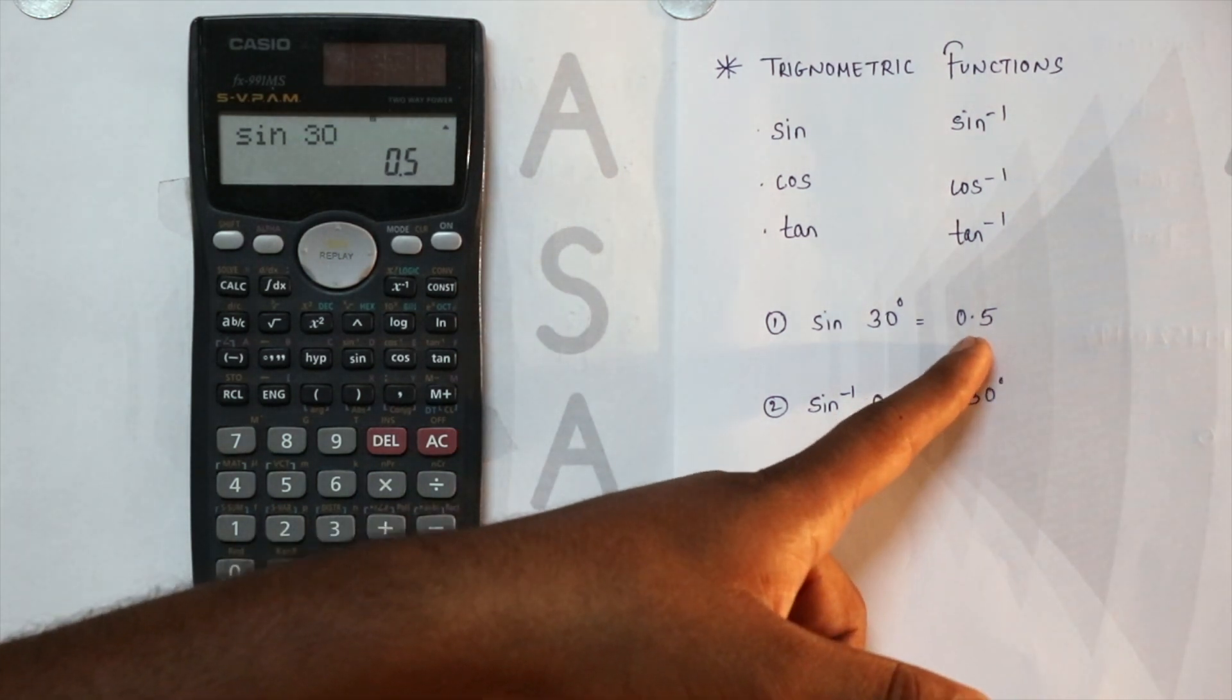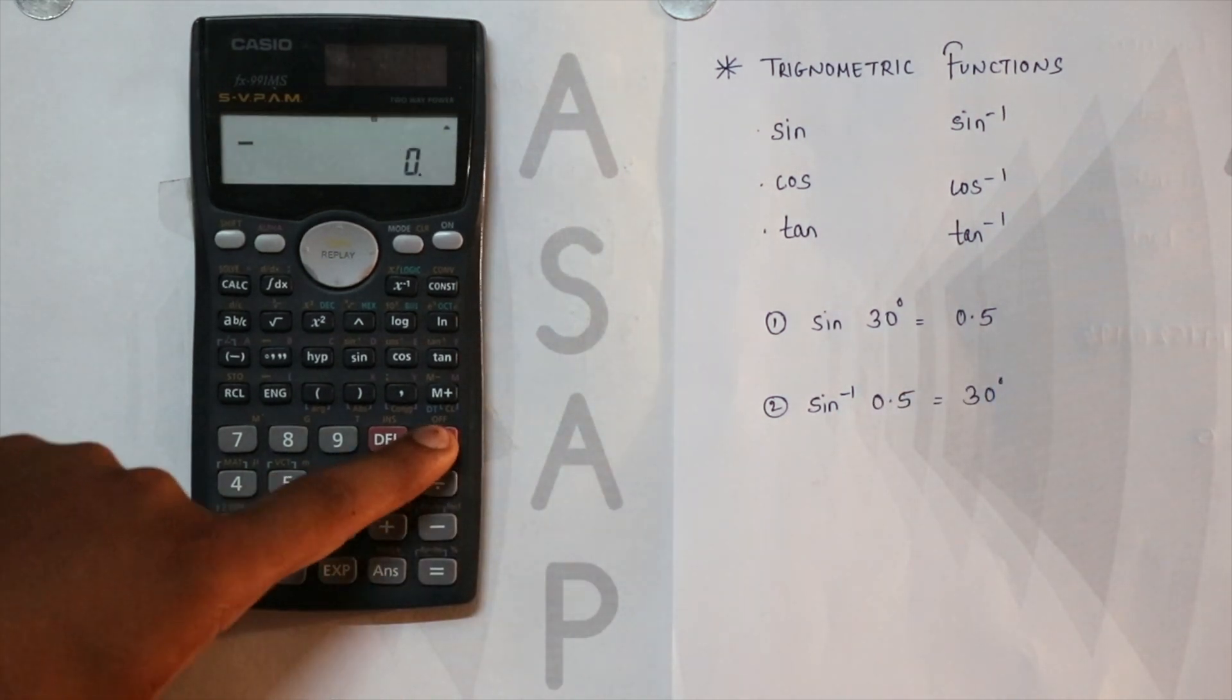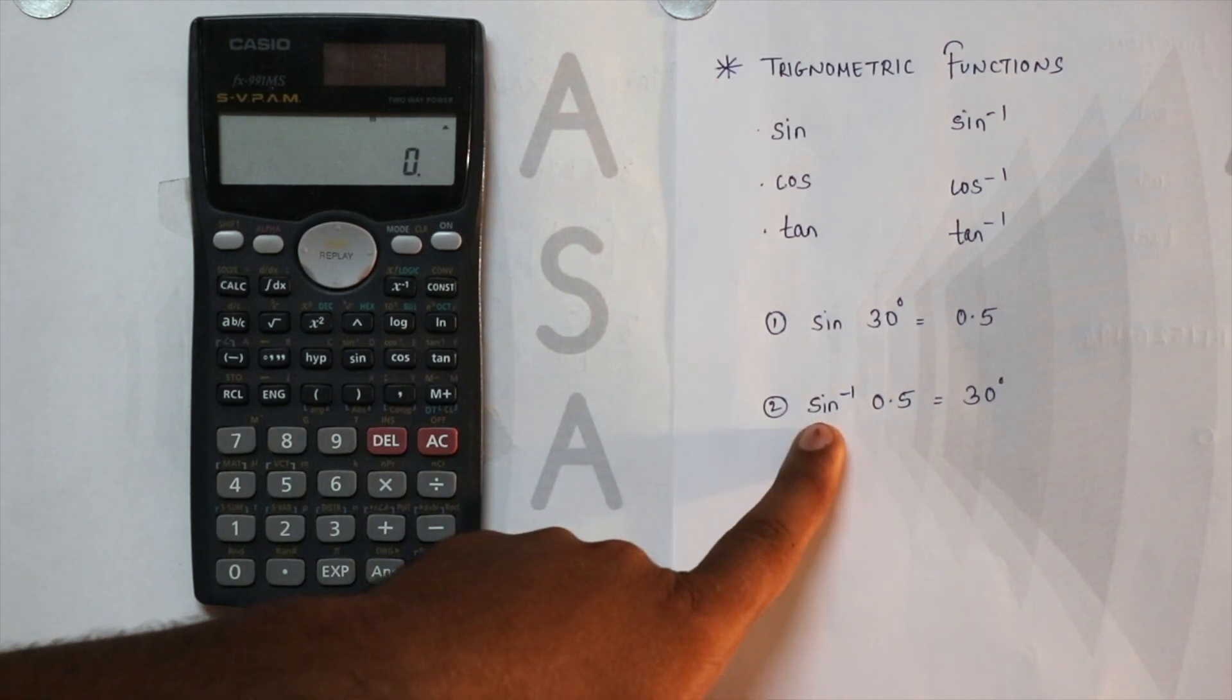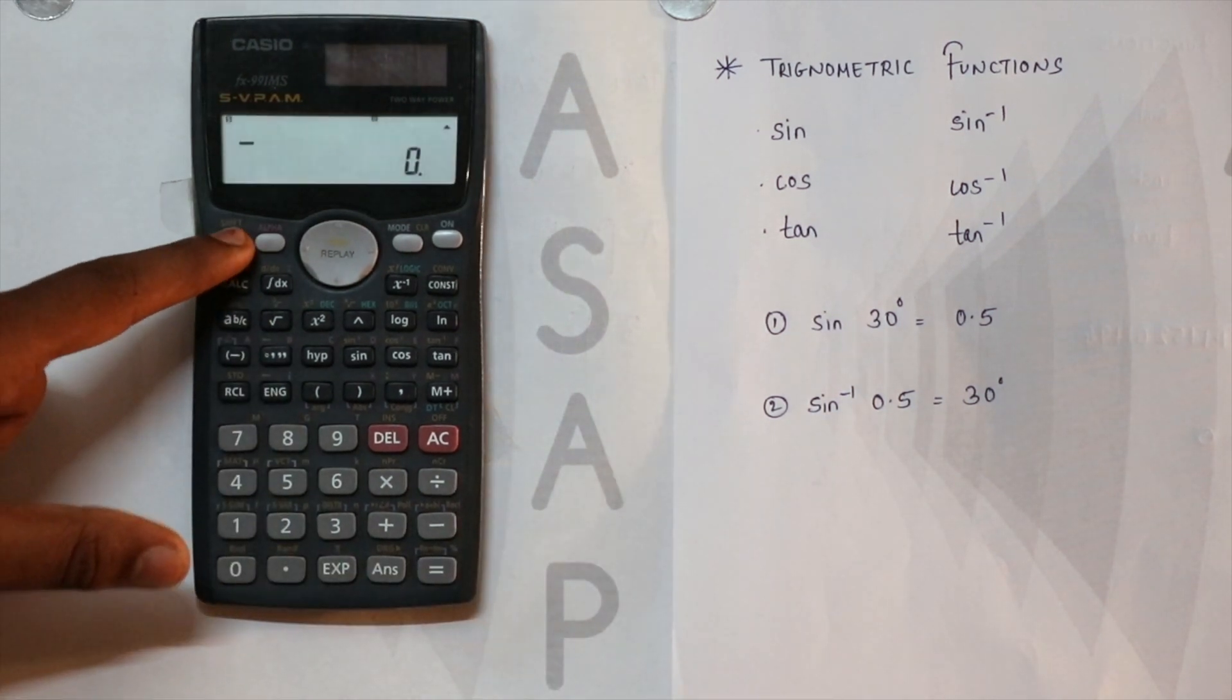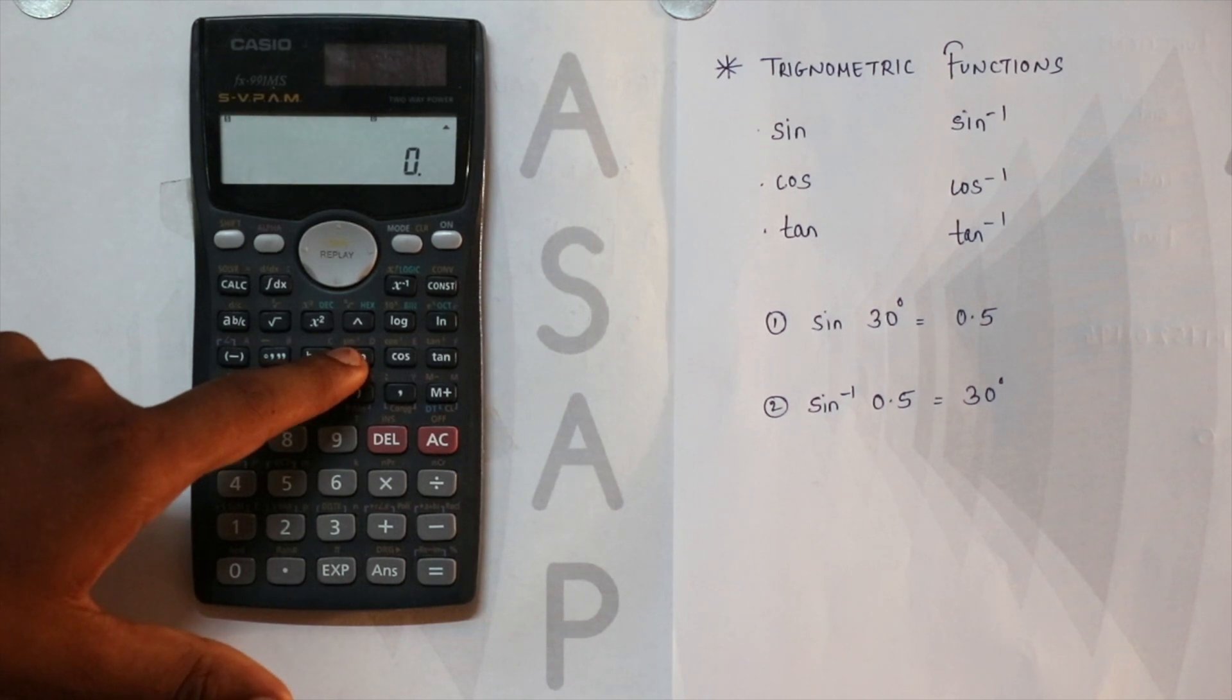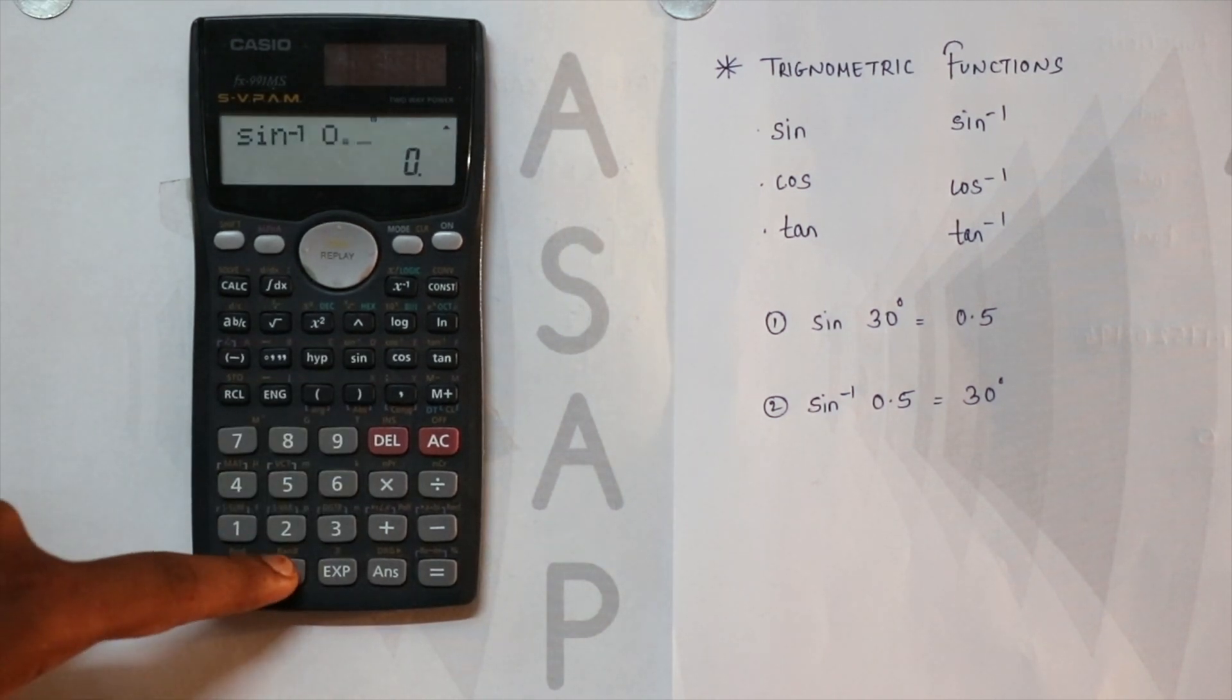Which we already have. Now again AC. If you want to find sine inverse, similarly shift and then the sine. You have your sine inverse written on top of this. Sine inverse of 0.5.